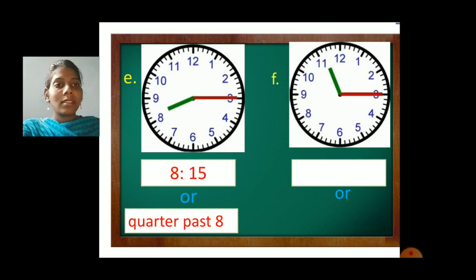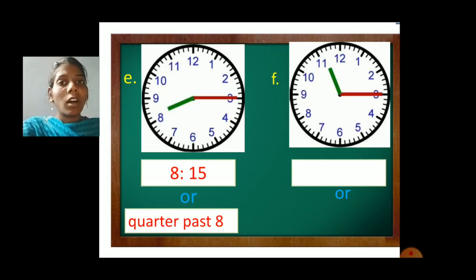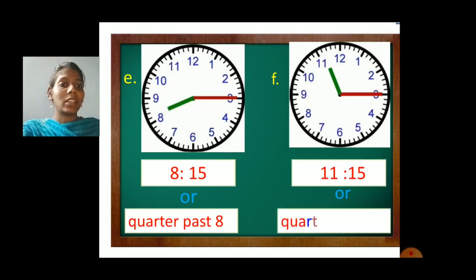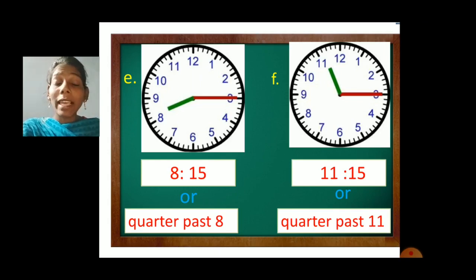B and D is your homework. Here, the smaller hand is at number 11 and the bigger hand is at number 3. So 5 threes are 15 — 15 minutes — and 11 hours. So 11 hours 15 minutes. And instead of 15 minutes, what you will write? Quarter past 11. Very good, quarter past 11. And tell me the spelling of quarter past. Quarter: Q-U-A-R-T-E-R. Past: P-A-S-T. Spelling is also important.